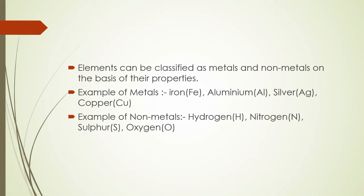How many metals and non-metals are in the periodic table? In the periodic table, there are total 118 elements which are divided into metals, non-metals and metalloids. Metals are 92, non-metals are 20, and metalloids are 6.